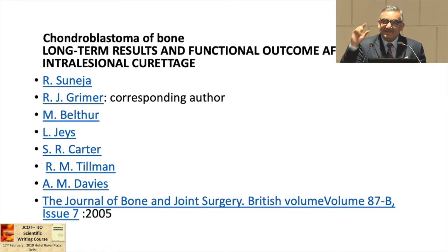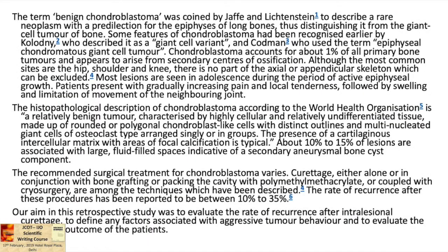In the introduction, the first paragraph is a generalized paragraph about the disease. In this case, he has discussed everything about chondroblastoma in the first paragraph. The term benign chondroblastoma was coined by Jaffe and Lichtenstein — this is the historical aspect — to describe a rare neoplasm with a predilection for the epiphysis of the long bone, thus distinguishing it from giant cell tumor of the bone. Some features of chondroblastoma had been recognized earlier by other authors, and it was also called giant cell variant; but Codman was the person who called it epiphyseal chondromatous giant cell tumor. This is the historical aspect.